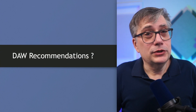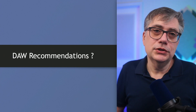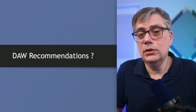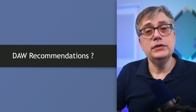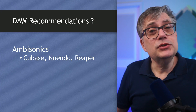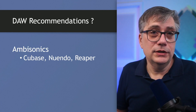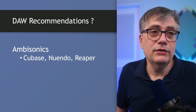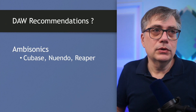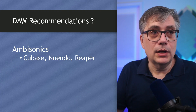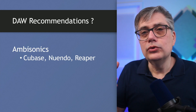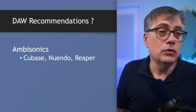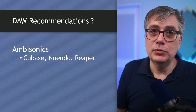This leaves one final thing: DAW recommendations for someone new to spatial audio. When it comes to Ambisonics, for me personally there's really only one choice — either Cubase or Nuendo. The reason is that these two digital audio workstations have third-order Ambisonics fully integrated. The workflow for virtual reality — first, second, and third-order — is fully integrated; you do not need any additional plugins. You start up the DAW and you're ready to go.